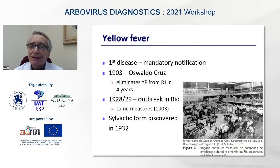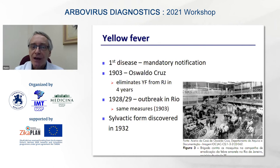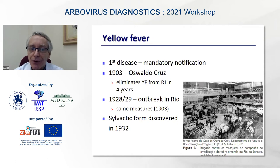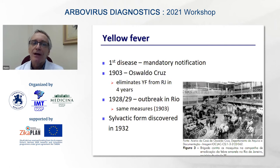Yellow fever was the very first disease in Brazil to require mandatory notification. A famous public health officer at that time was Oswaldo Cruz, who later gave his name to one of the most important biotechnology and tropical medicine research institutes in Brazil today. Oswaldo Cruz led the operation to control yellow fever in Rio de Janeiro and succeeded in eliminating the disease from the Brazilian capital in four years.